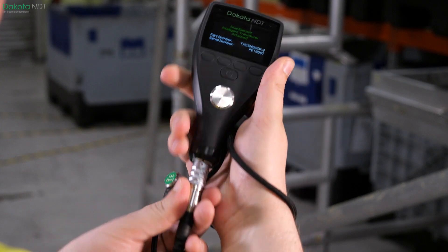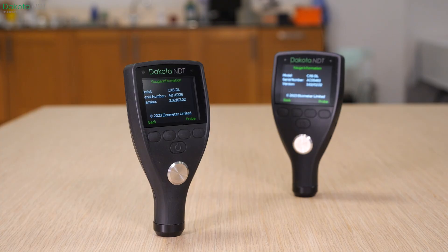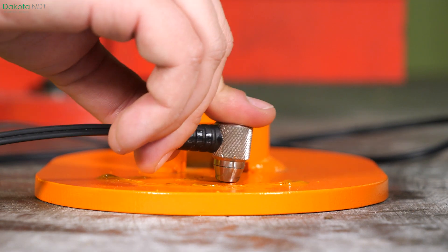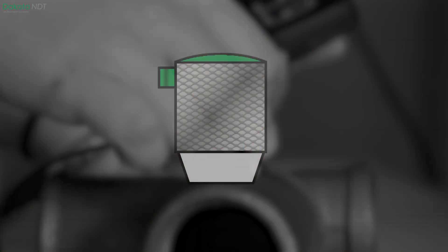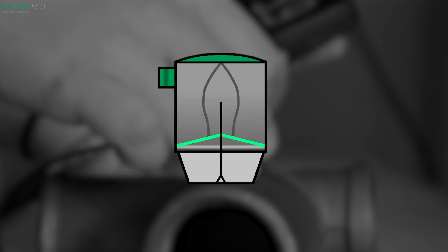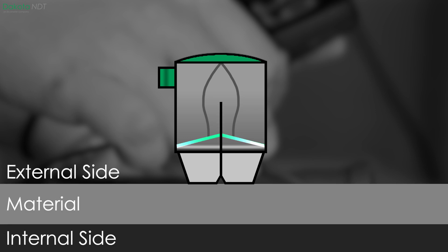The Dakota NDT-CX range of ultrasonic material thickness gauges can measure coated and uncoated materials up to 500 millimeters thick. Dual element transducers consist of two independent crystals separated by an acoustic barrier. The two elements are angled so that when one crystal emits an ultrasonic pulse, the path created creates a V-shape entering the material via ultrasonic couplant, hitting the back wall of the material and echoing towards the other crystal, where it is then detected.